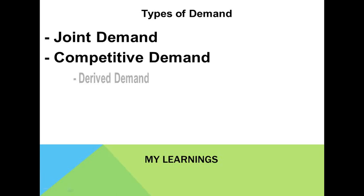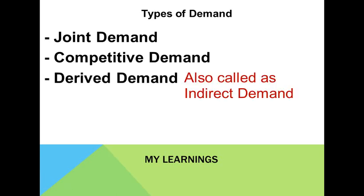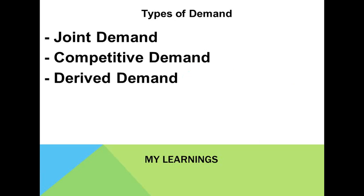Derived demand, or indirect demand, is when the demand of a product is derived from the demand of some other product. For example, cement is demanded not for direct consumption, but because there is a demand for housing — hence cement derives its demand from the demand for housing.